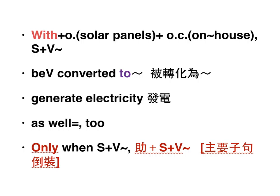除了太陽能板，wind turbine是風力渦輪發電。With有著什麼東西，balcony是我們的陽台，我們就可以用風力來generate electricity發電，as well在句尾等於too，也可以用來發電。Only when the sun is not shining or the wind not blowing will we have to pay a power company for electricity。